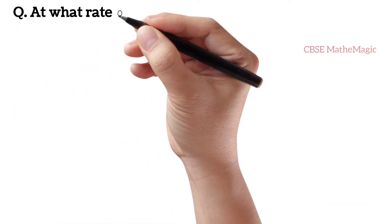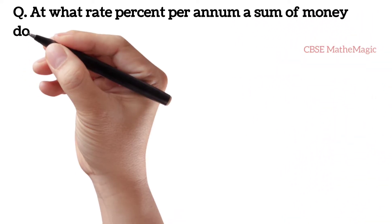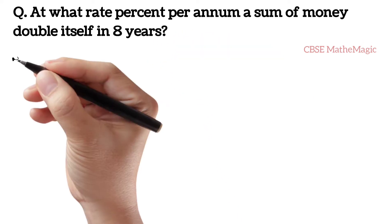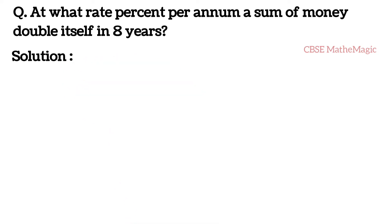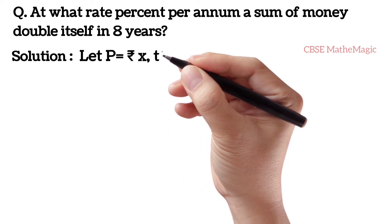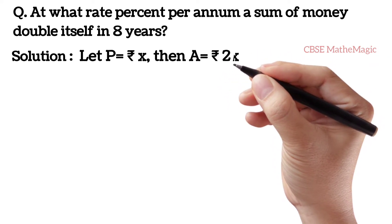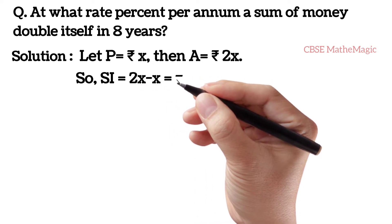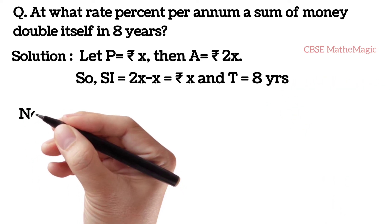At what rate percent per annum does a sum of money double itself in 8 years? Solution. Let the principal be Rs. x, then the amount will be Rs. 2x. So simple interest is equal to 2x - x, i.e., Rs. x, and time is given as 8 years.